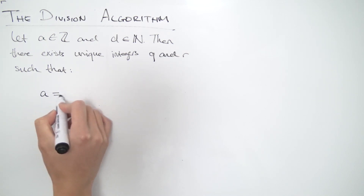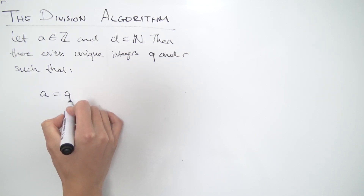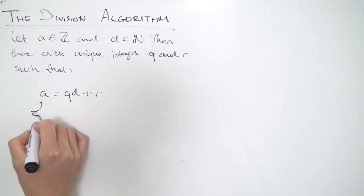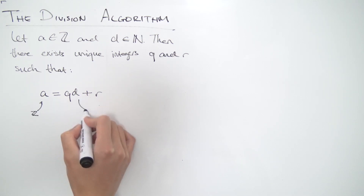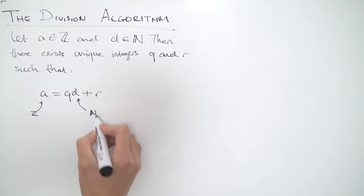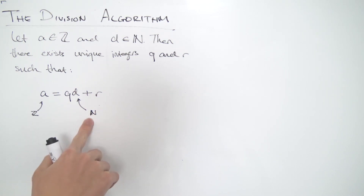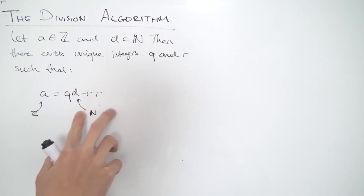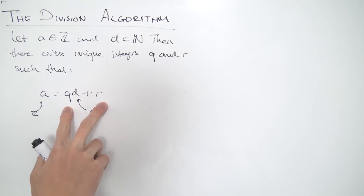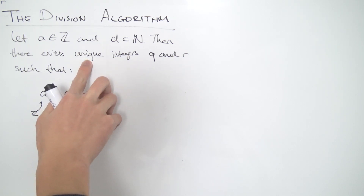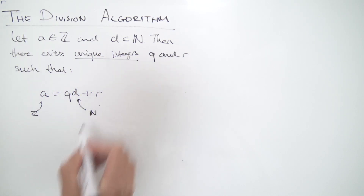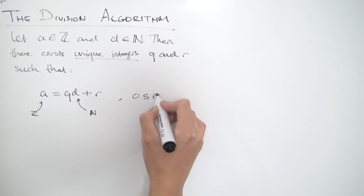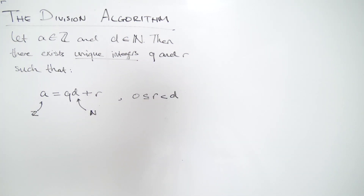We have A, and we can write A as Q times D plus R. So A is our chosen integer and D is our chosen natural number. We can write it as a natural number times another integer plus another integer. And we want to show that Q and R are unique integers, and that we also have zero is less than or equal to R, which is strictly less than D.